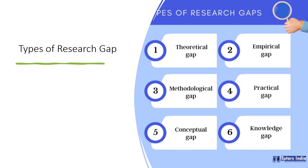In the next few minutes, we'll be looking at the types of research gaps. As a researcher or student planning to write a dissertation, you should be able to carve a niche for yourself and identify the type of gap that aligns with your dissertation. We have different types of research gaps: theoretical gaps, empirical gaps, methodological gaps, practice gaps, conceptual gaps, and knowledge gaps.